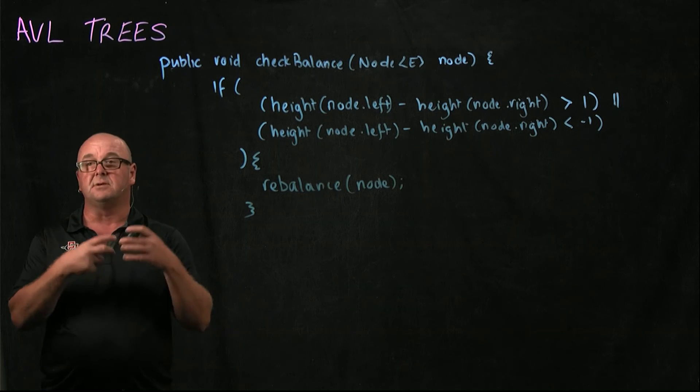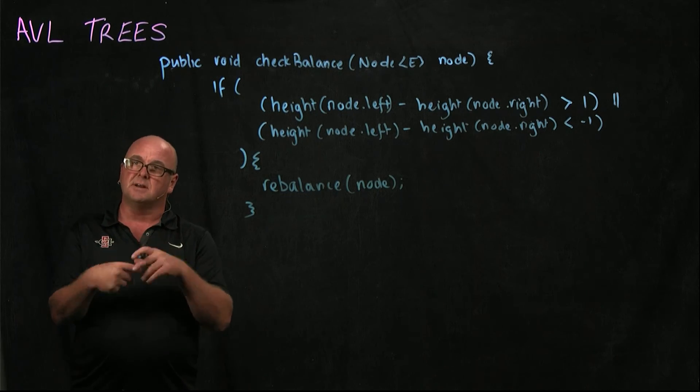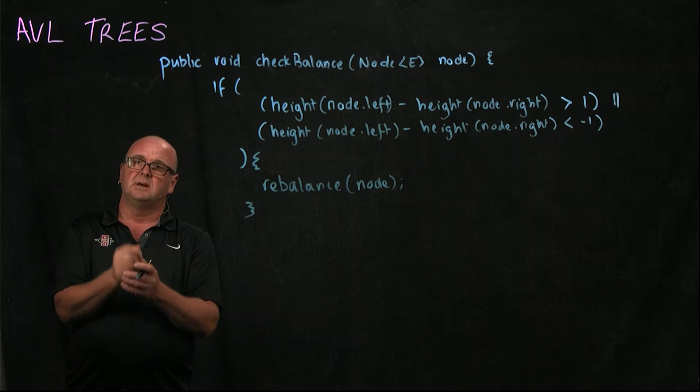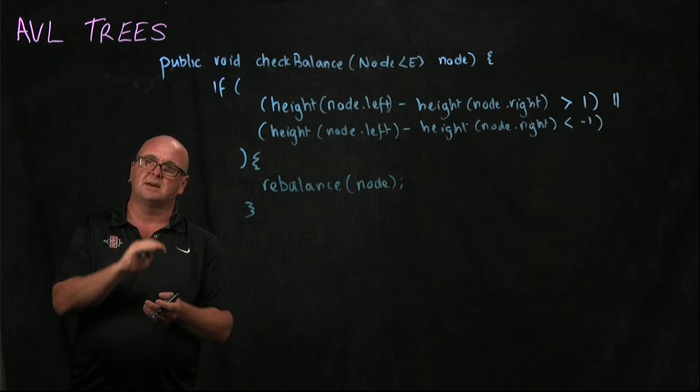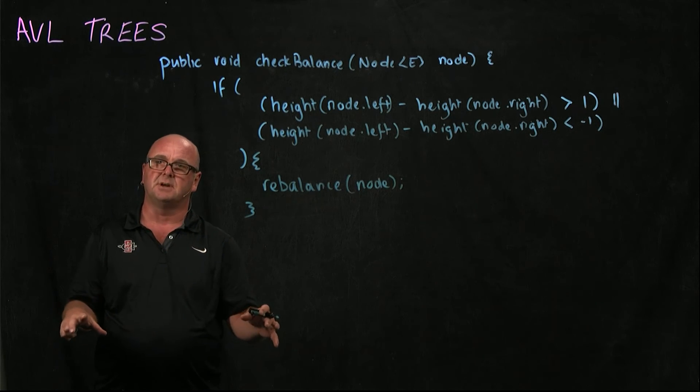If they're not true, or after we come out of the rebalance method, then we need to test the parent until we get to the root. First of all, we need to check, is our parent null? If our parent's null, that means we're at the root node and we've rebalanced the whole tree.